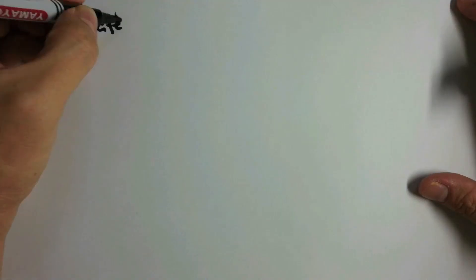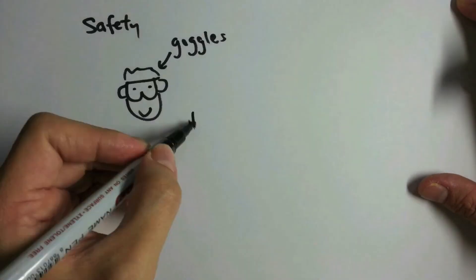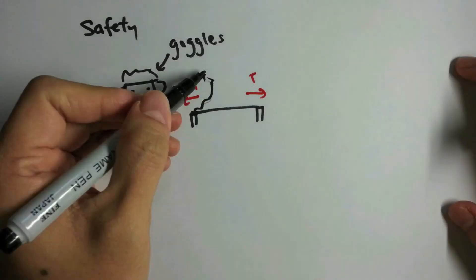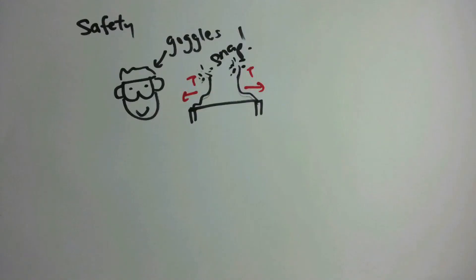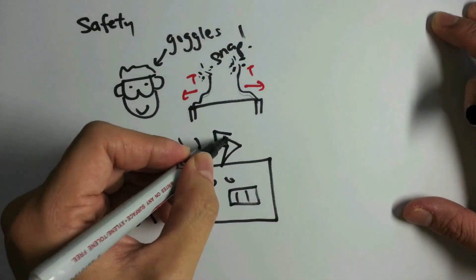As a safety precaution, the person conducting the experiment should wear goggles as the wire at high tension might suddenly snap or come loose. Always handle power supply with care.